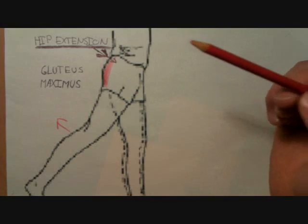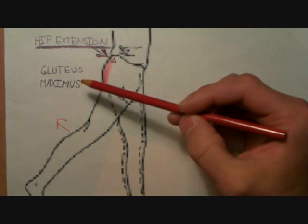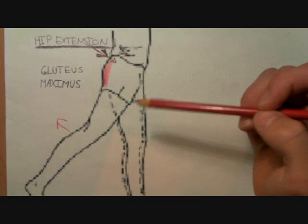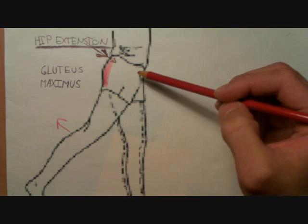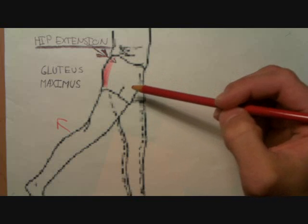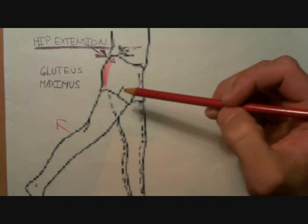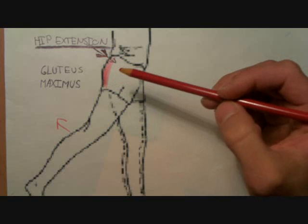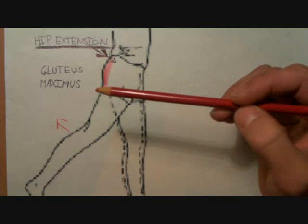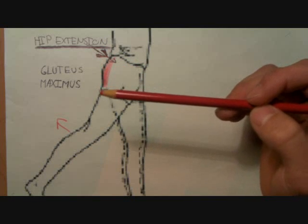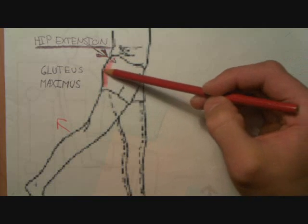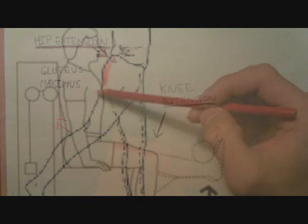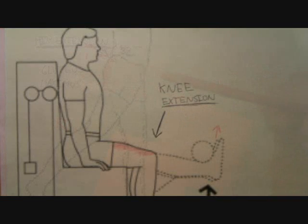The next muscle I want to talk about is the gluteus maximus. The gluteus maximus is opposite of the hip flexors in that it's on your butt. The gluteus maximus is involved in extension of the thigh at the hip joint.